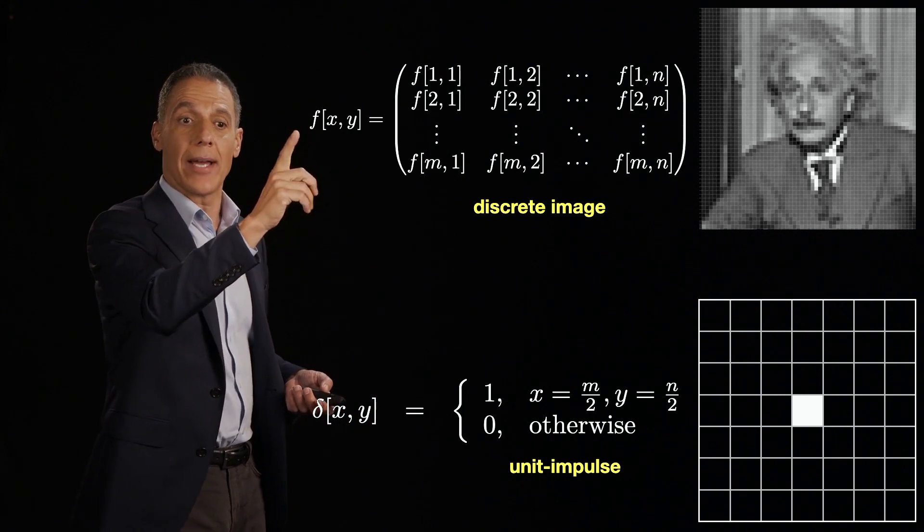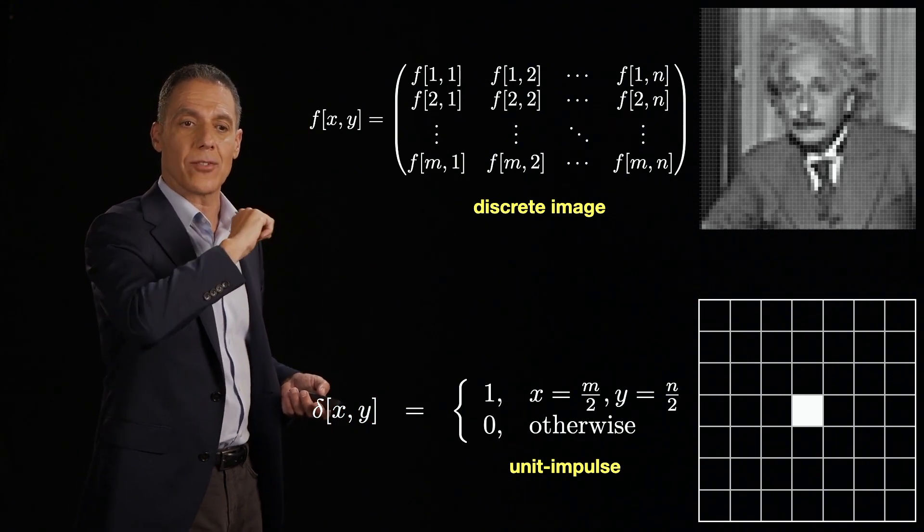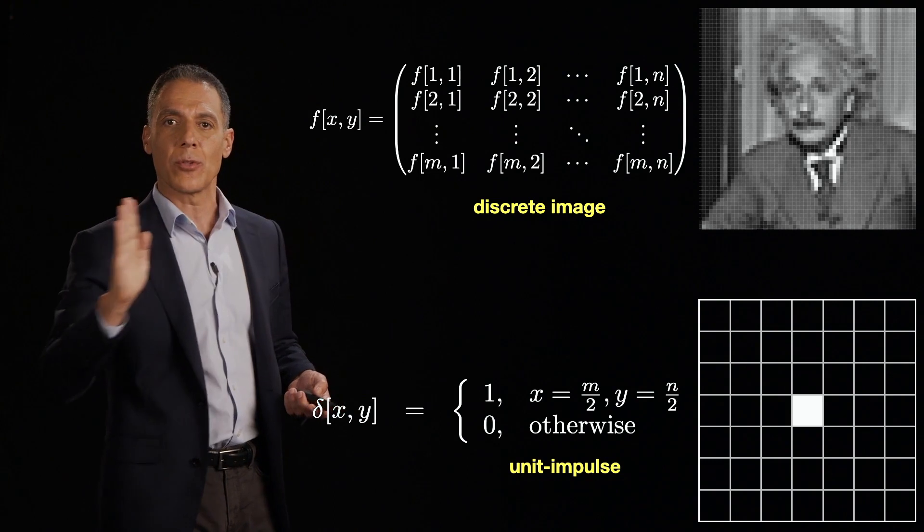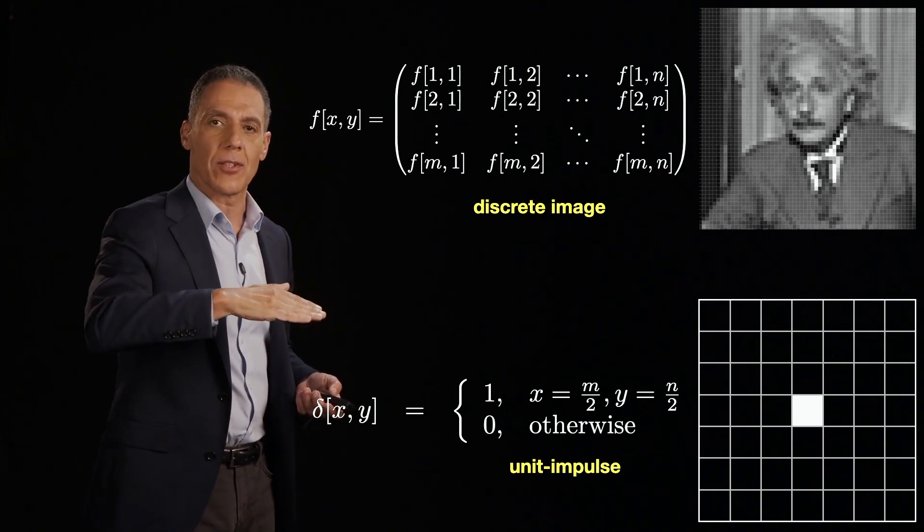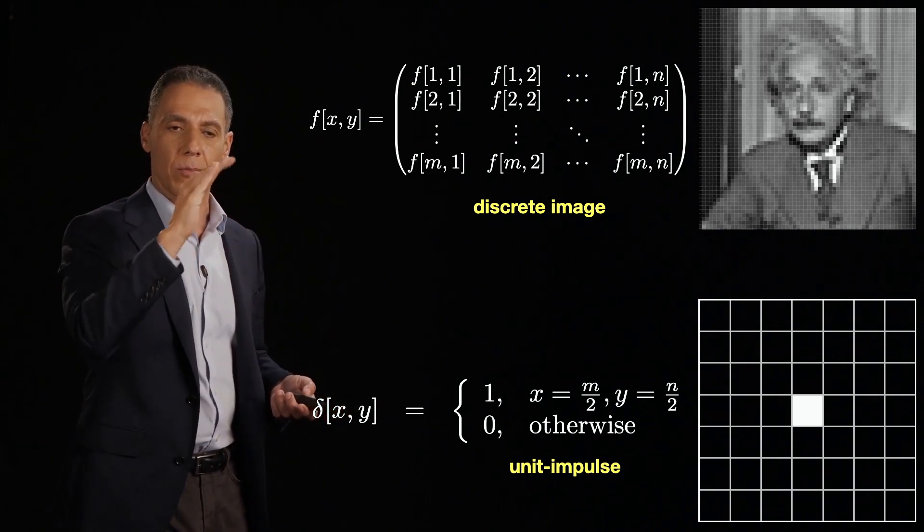It's f[x,y]. Same square brackets as before. X corresponds to the horizontal, Y corresponds to the vertical position - column, row.